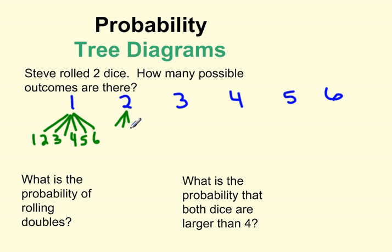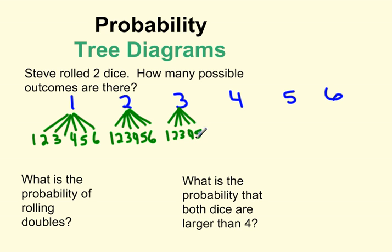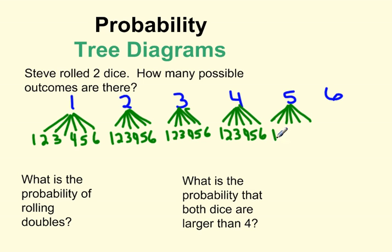For every value on the first die, the second die branches into one, two, three, four, five, or six. If he rolled a three first, he could roll a one through six on the second die. If he rolled a four, a five, or a six first, the same applies — each branches into one through six on the second die.